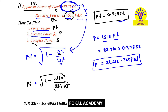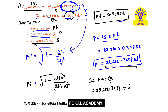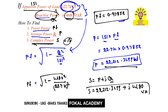The complex power equals average power plus J times reactive power. So complex power S equals 22,212.3299 plus J times 4680. The units for complex power are volt-amperes. This completes the calculation of complex power, average power, and power factor for the given problem.